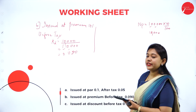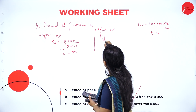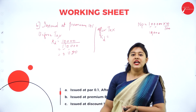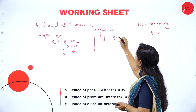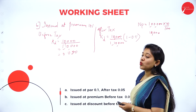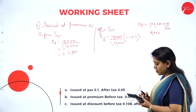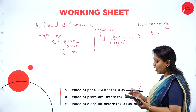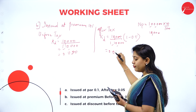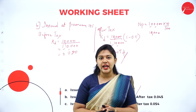After tax, cost of debt = interest divided by net proceeds, multiplied by (1 minus tax rate). Interest is 10,000, net proceeds is 1,10,000, and tax rate is 0.5. So, 1 minus 0.5 = 0.5. Therefore, 10,000 divided by 1,10,000 into 0.5 = 0.0454. This is the cost of debt after tax if the debenture is issued at a premium.